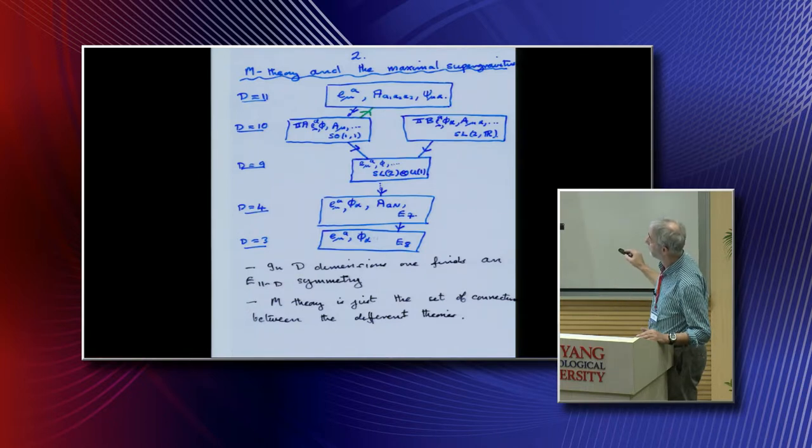You can continue the process to 4 dimensions, and here you find a theory with a graviton, some 70 scalars and 56 vectors. This one has this Cremmer-Julia symmetry, the E7.